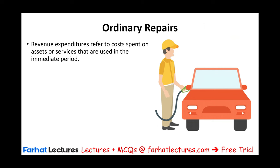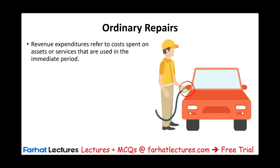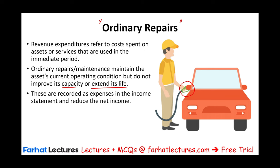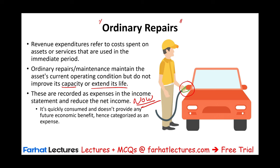Starting with ordinary repairs — those are revenue expenditures. They refer to costs spent on assets or services that are used in the immediate period. The simplest example is when you fill your car with gas. You are maintaining the car because without gas, you cannot run it. Ordinary repairs maintain the asset's current operating condition, but they don't improve its capacity or extend its life. They are recorded as expenses in the income statement and affect your net income now, because they are quickly consumed and don't provide any future economic benefit. That's why we treat ordinary repairs and maintenance as an expense.